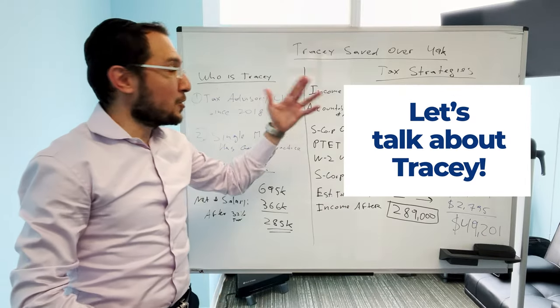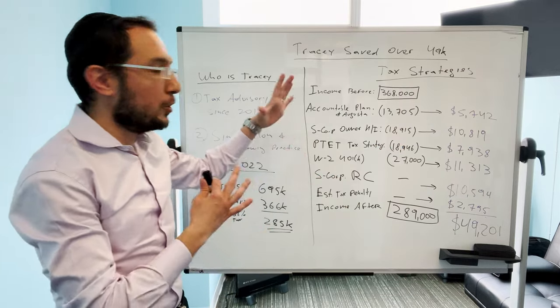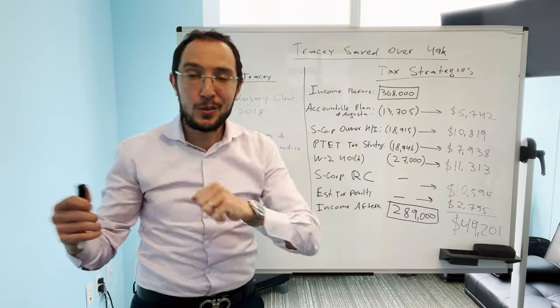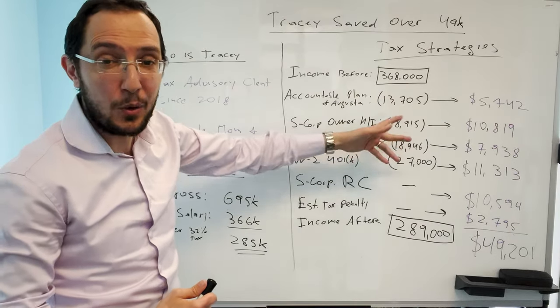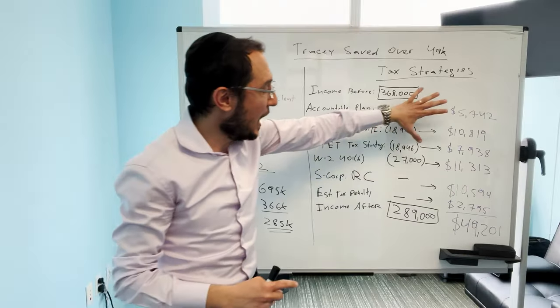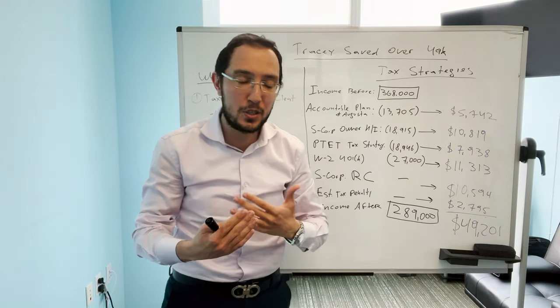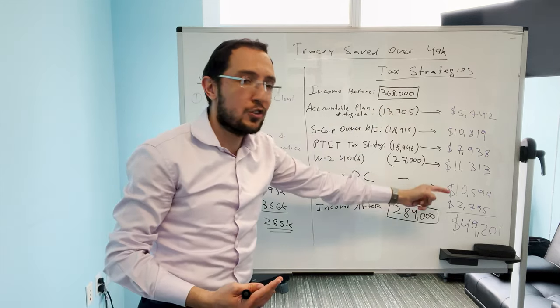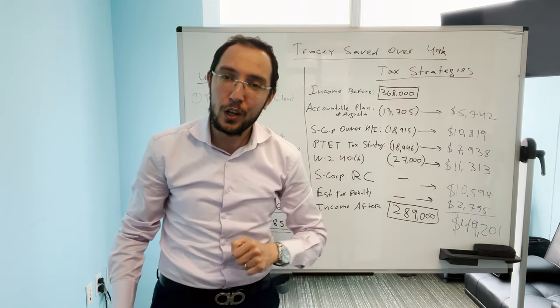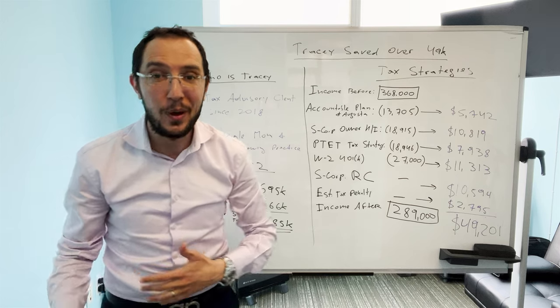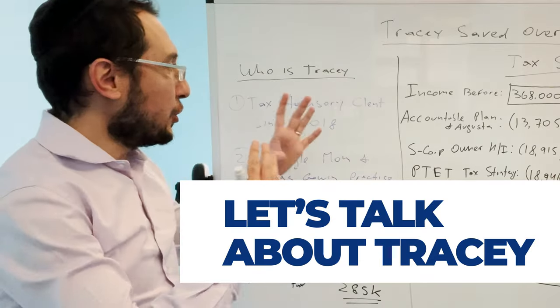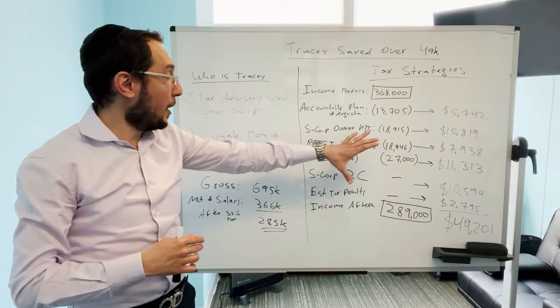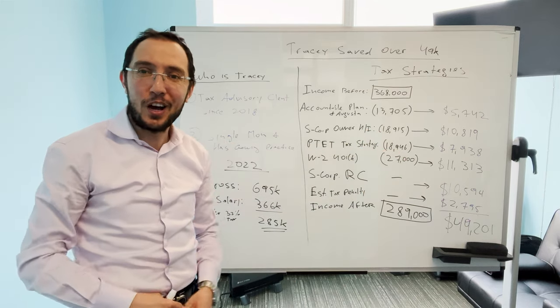Let's talk about Tracy, our tax advisory client. What I'm going to do in this video is I've broken down each tax strategy that we used for her on her 2022 taxes, each deduction associated with this strategy. And the best thing is that I've also put down the savings for you. I want to show you what that tax strategy is, how much it was in deduction, and what it generated in tax savings, giving her $49,000 in tax savings for 2022.